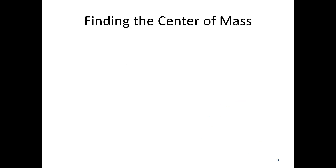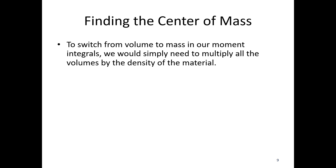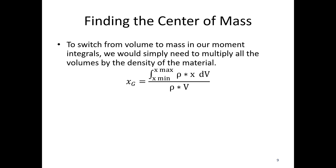So next, finding the center of mass. If we switch from the centroid of a volume to mass in our moment integrals, we simply need to multiply all the volumes by the density of the material. Density times volume equals mass, density times dV equals dm — the rate of change of mass. This gets us to the center of mass calculation, which would be xG, yG, and zG.